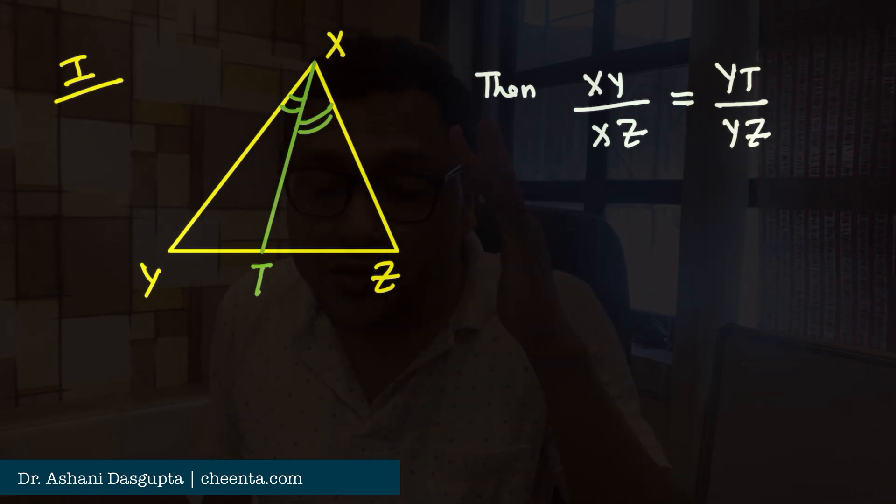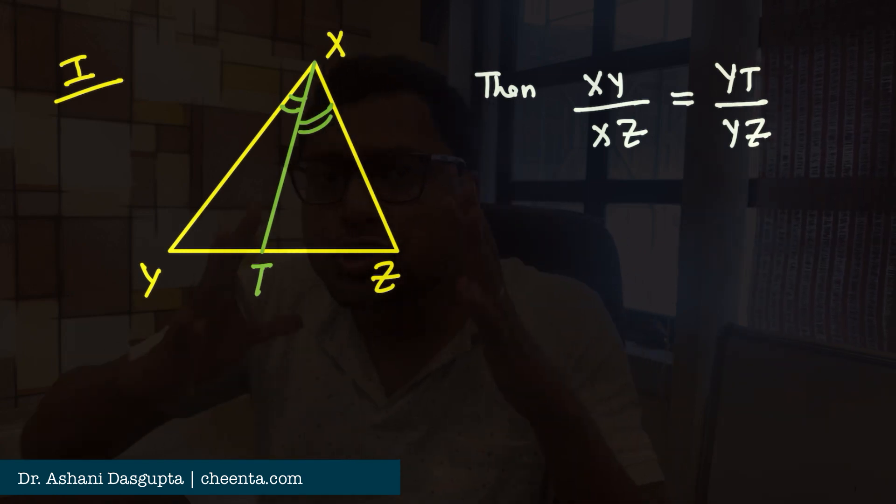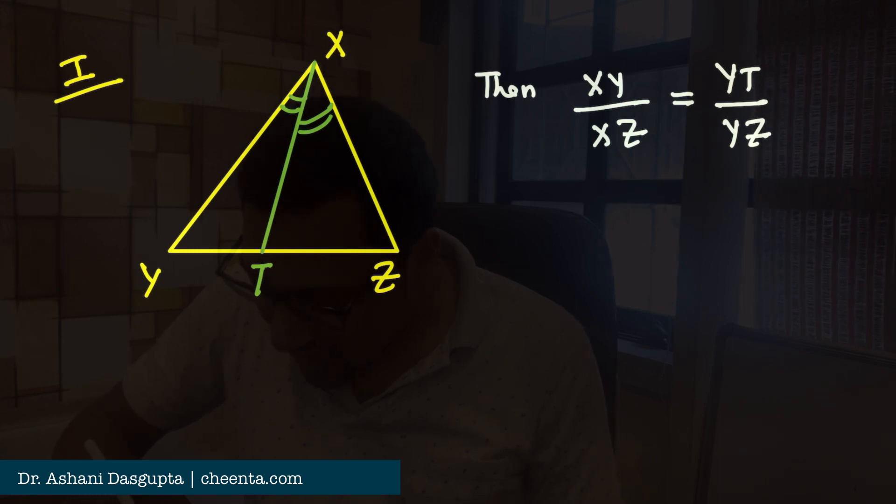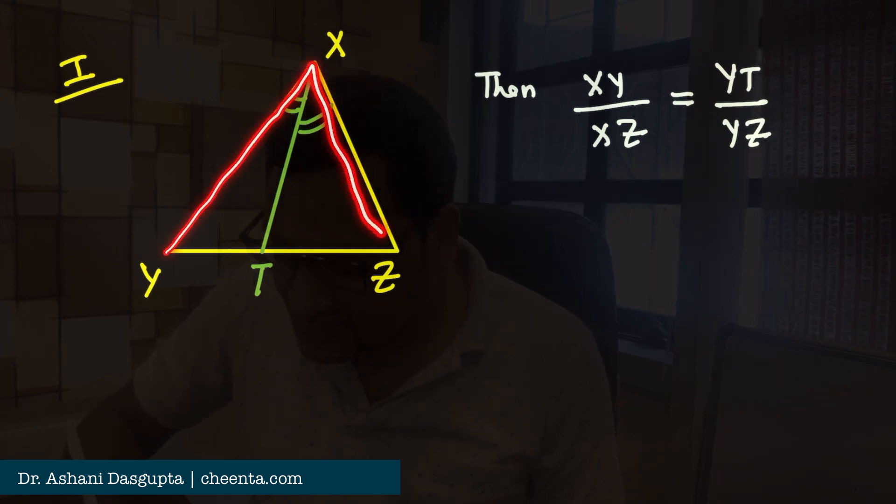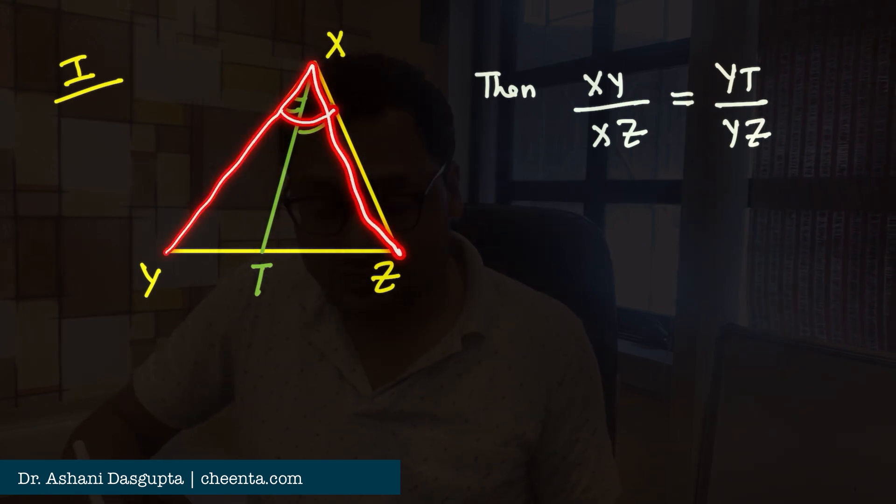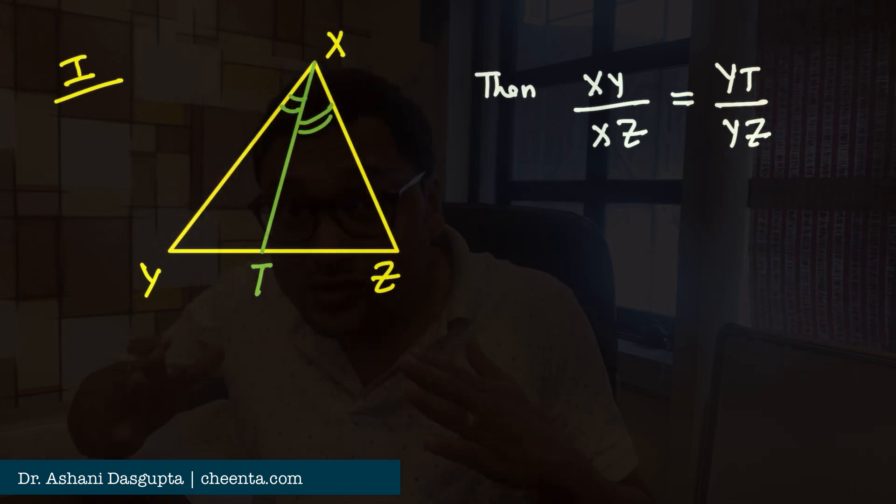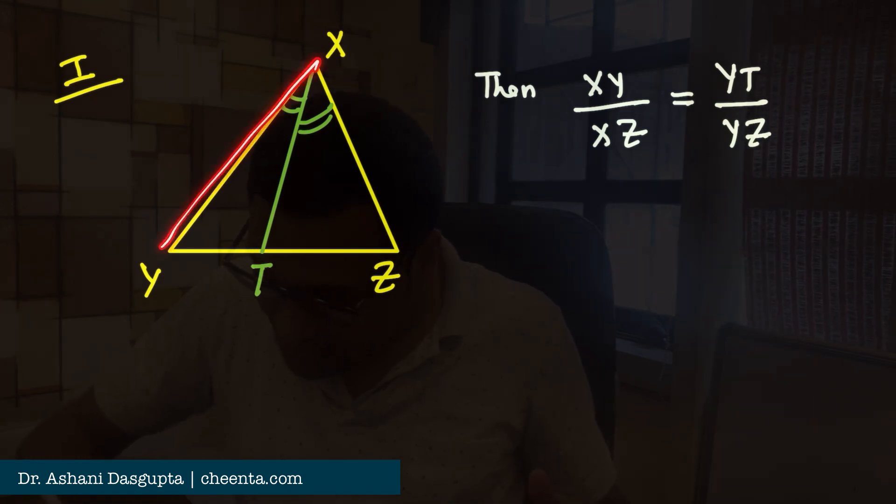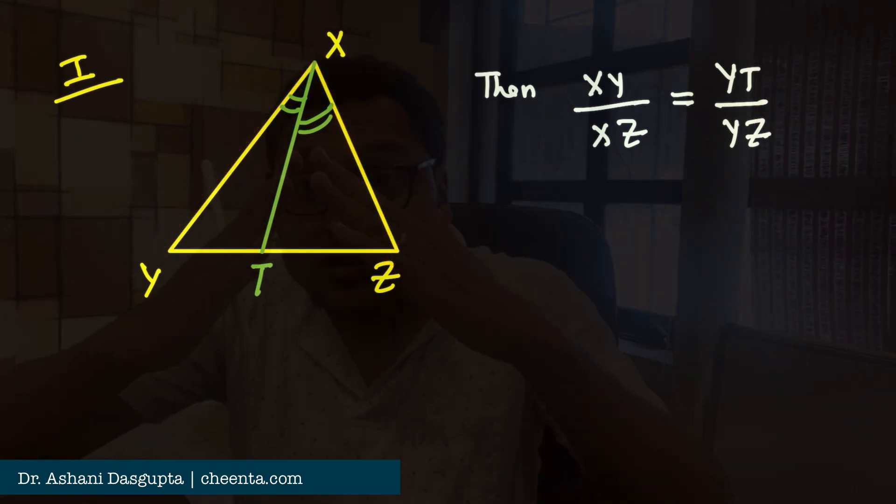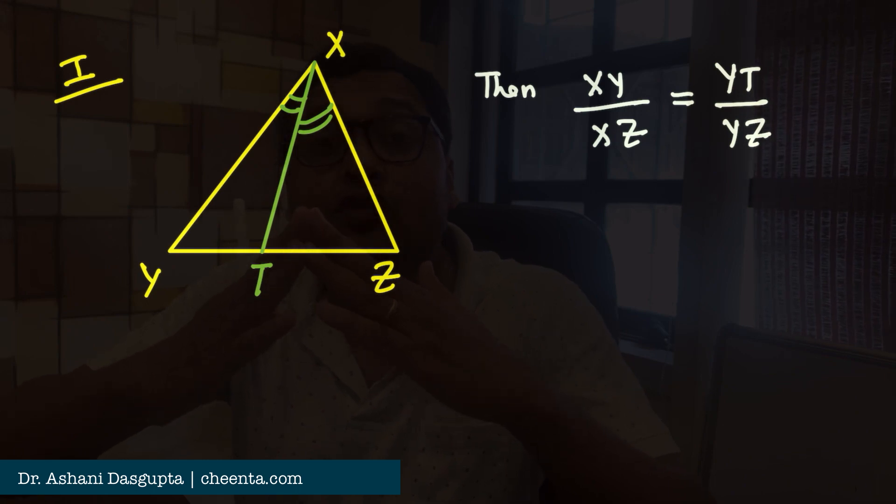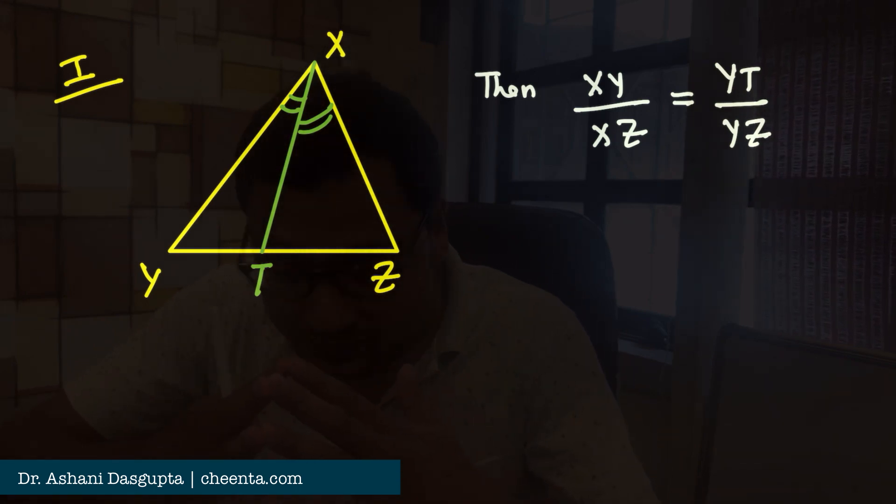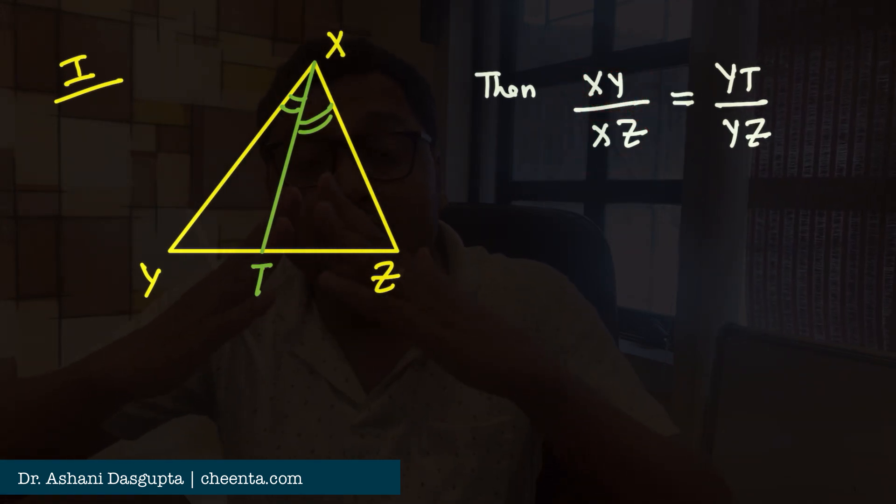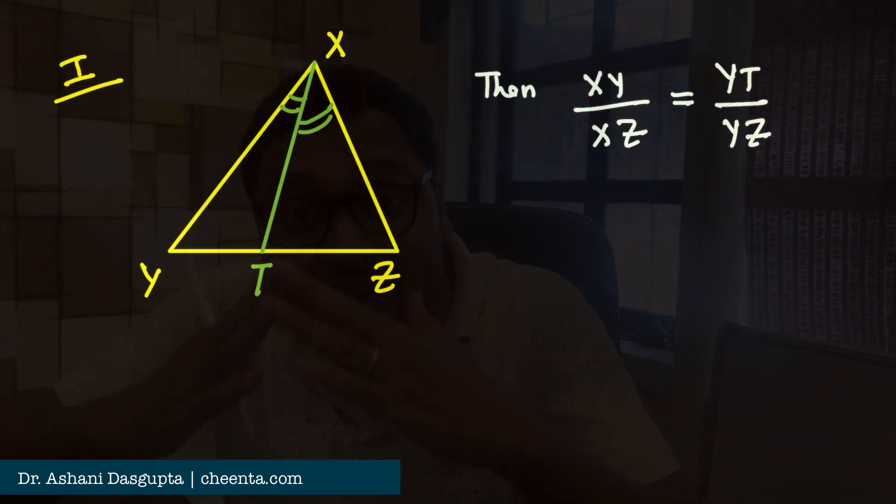Now, I will tell you how you can remember this or how you should be thinking about this. Well, the angle YXZ, that is the angle X, think about the two sides of the angle, that is XY and XZ. You have to take the ratio of those two sides. That's what I have written here, XY and XZ. The ratio of the two sides which makes the angle.